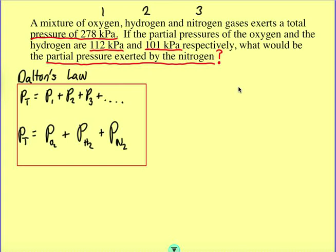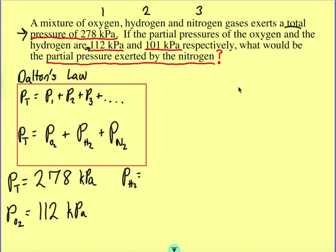Those are four variables that we need to worry about. So let's go ahead and write them out. P total is right there. It says total pressure of 278 kPa. The pressure of the O2 is given right here, 112 kPa. The pressure of the H2 is 101 kPa. The pressure of the N2 is what we're trying to find. Since all of them are in kPa, and it doesn't say that we need the pressure in any particular unit, we don't have to do any conversions. All we have to do is plug these variables into this equation.